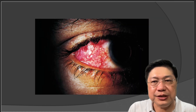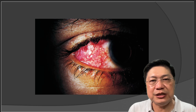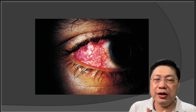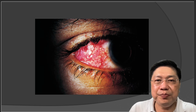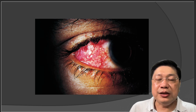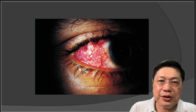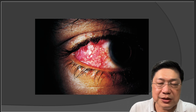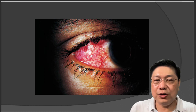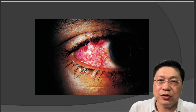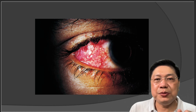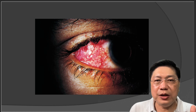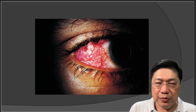Scleritis is different — the color is more purplish because the sclera itself is thinning out, exposing more of the colored areas underneath. The swelling is deeper and the pain is more dull because of the involvement of deeper structures. Both scleritis and episcleritis respond very well to steroid treatment.